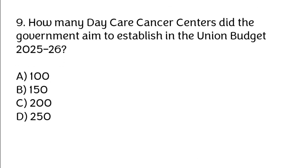How many day care cancer centers did the government aim to establish in the Union Budget 2025-26? A. 100, B. 150, C. 200, D. 250. Correct answer is C. 200.